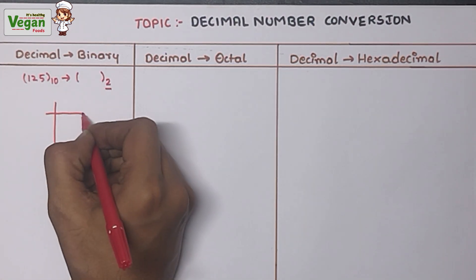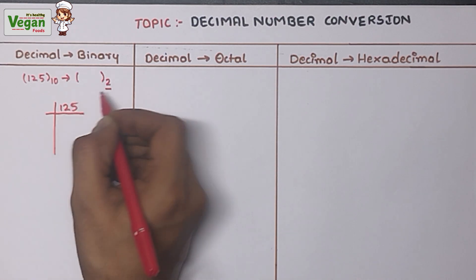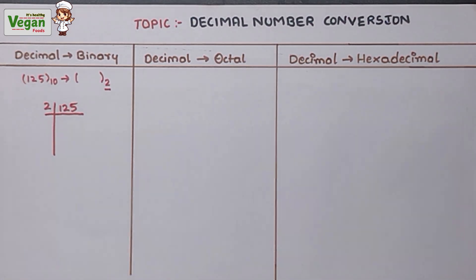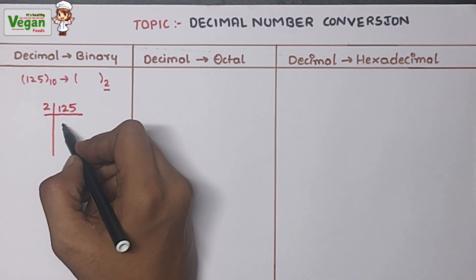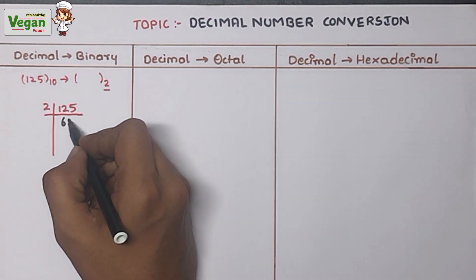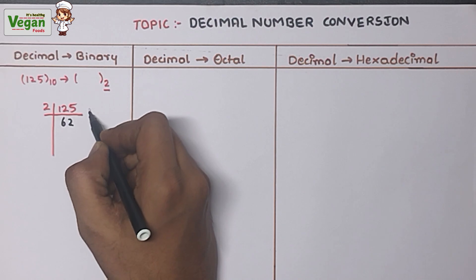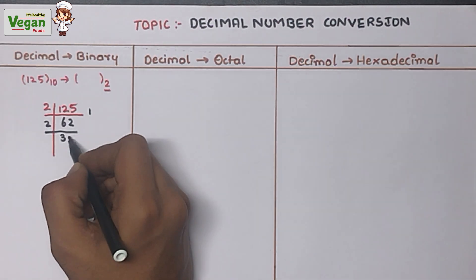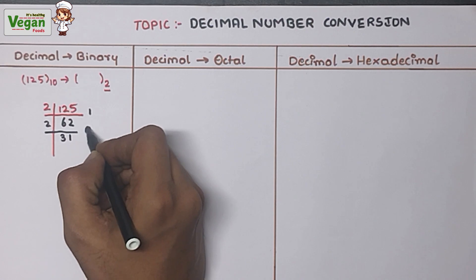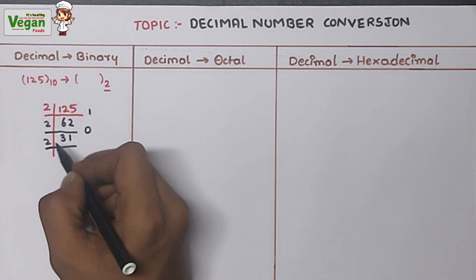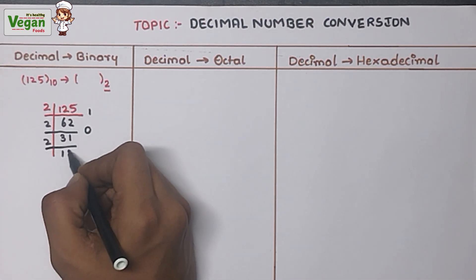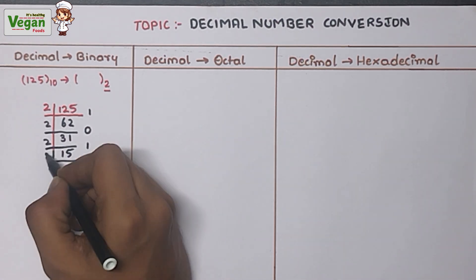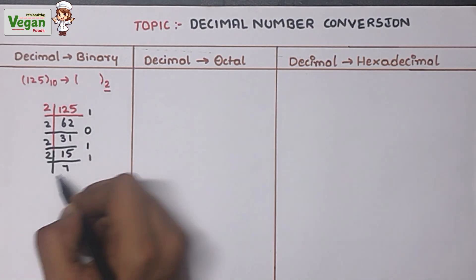To convert this decimal value to binary, divide 125 by 2. 125 ÷ 2: 2×6=12, remainder 1. Next, 62 ÷ 2: 2×3=6, remainder 0. Then 31 ÷ 2: 2×1=2, remainder 1. Next, 15 ÷ 2: 2×7=14, remainder 1.